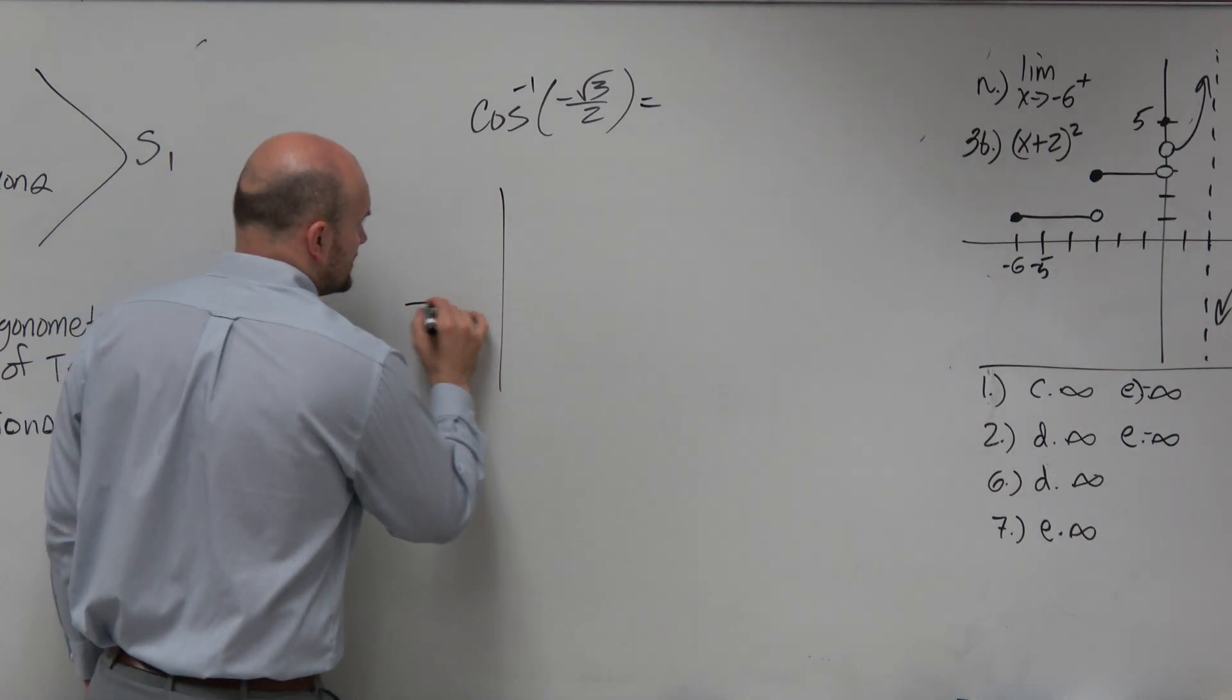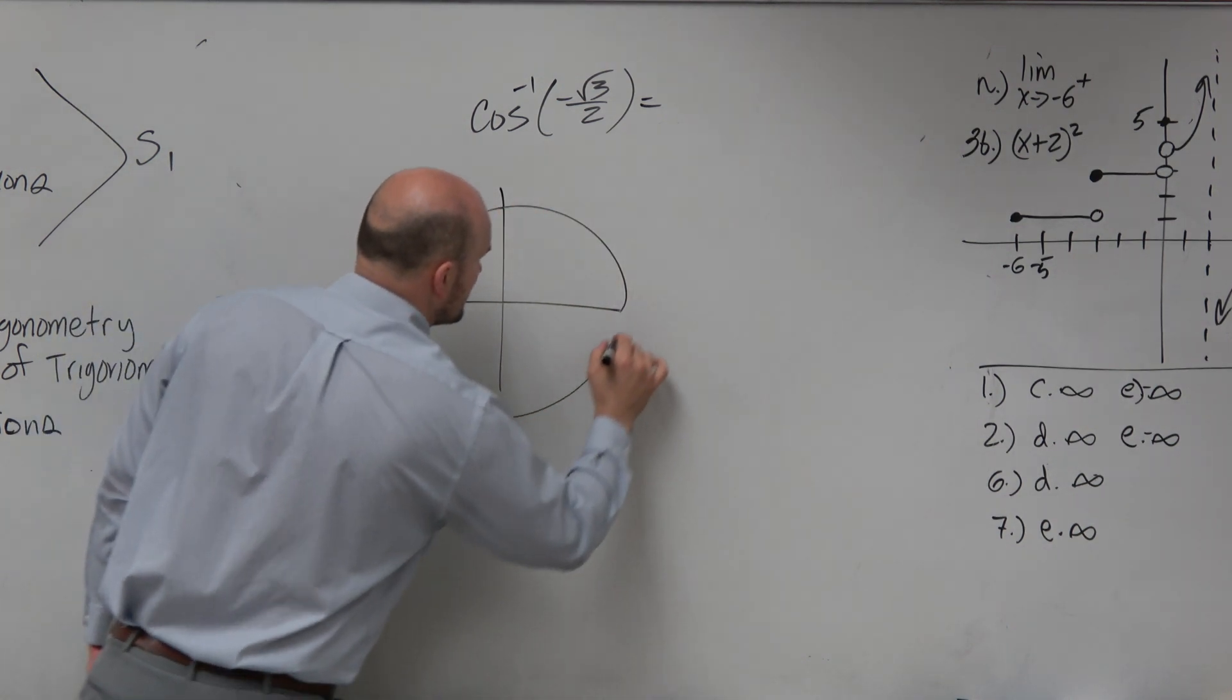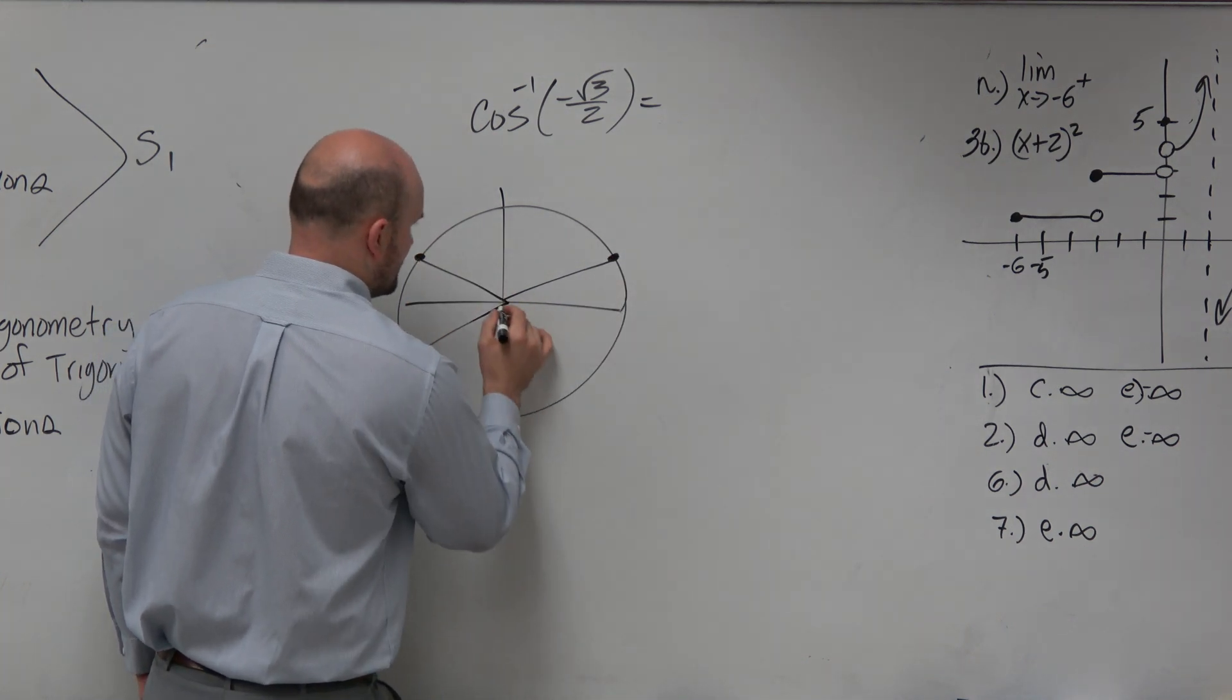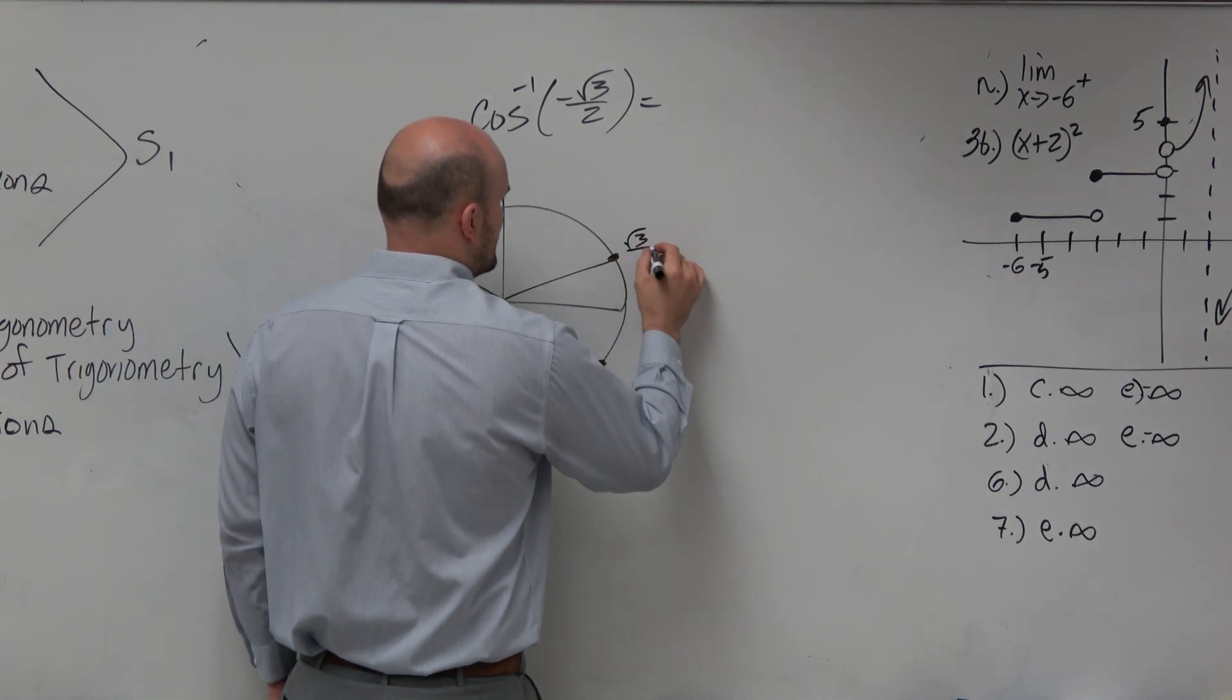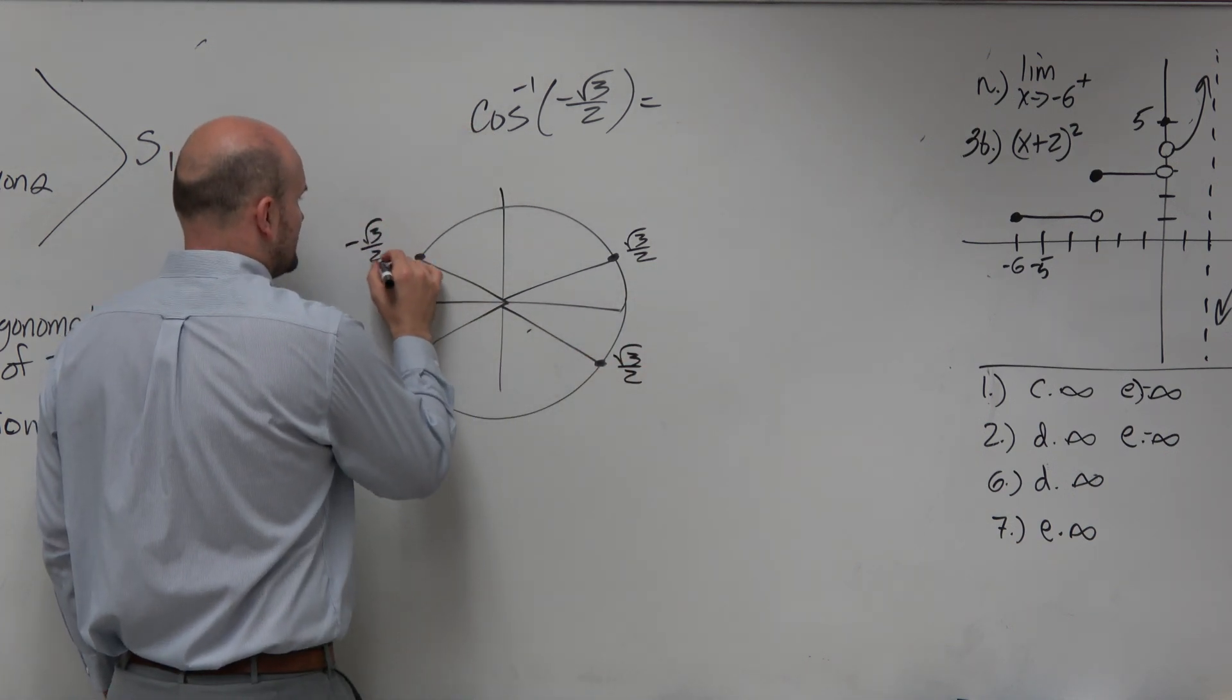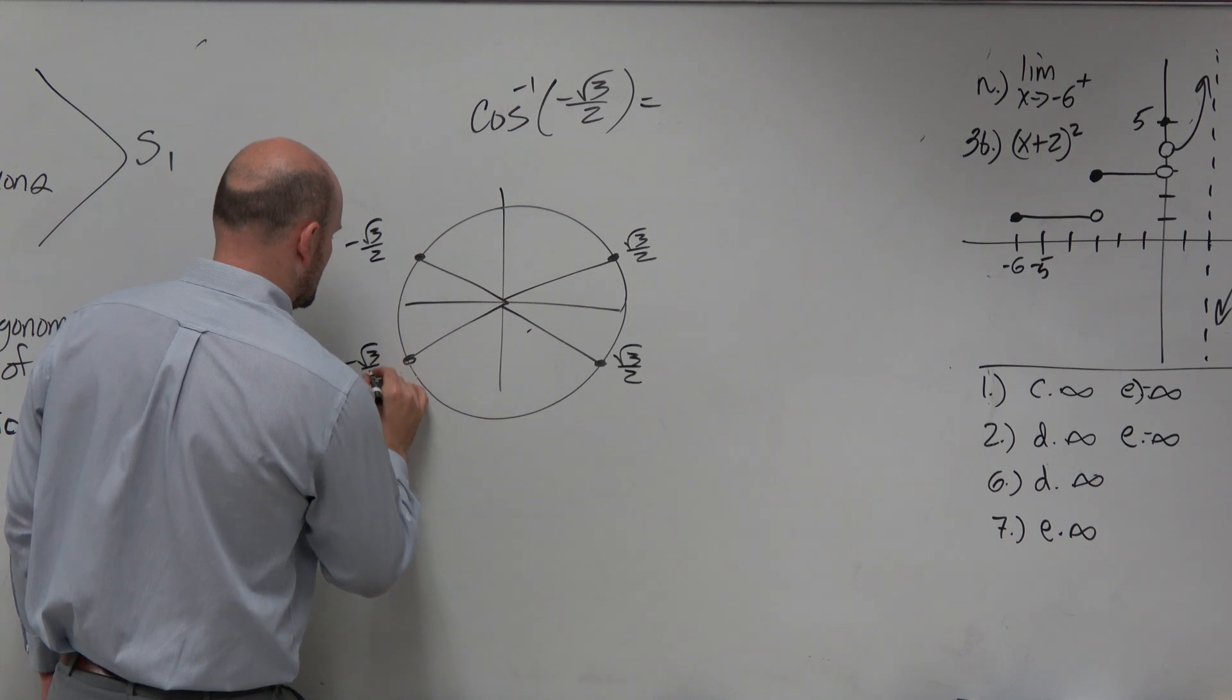So understanding your unit circle here, hope you guys remember that. Here's all the points where cosine is equal to square root of 3 over 2. Square root of 3 over 2, square root of 3 over 2, negative square root of 3 over 2, negative square root of 3 over 2.